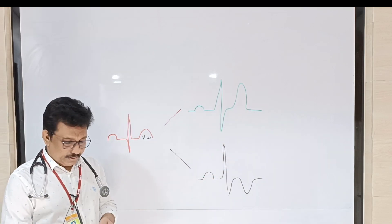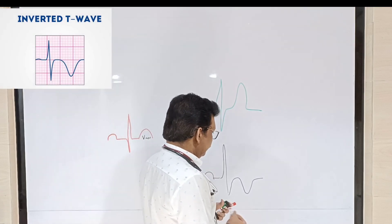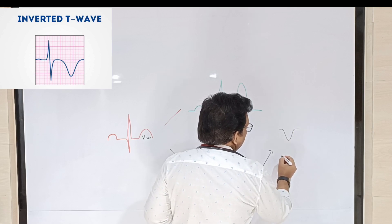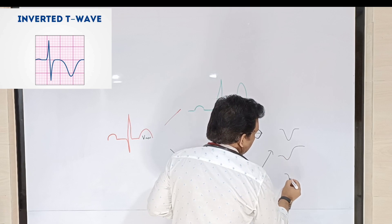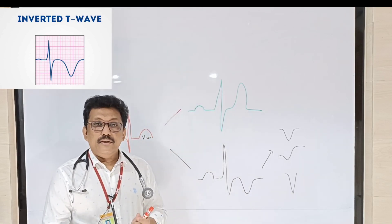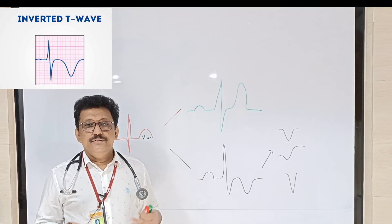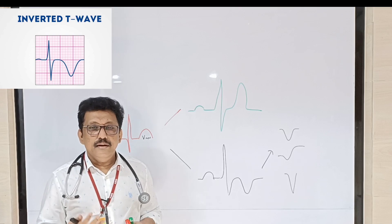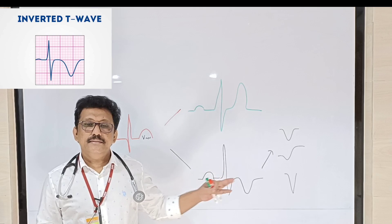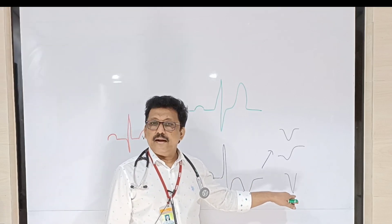Now, inverted T waves — there are different types of inversion. T waves can be symmetrically inverted, asymmetrically inverted, or deeply inverted. Deeply inverted T waves mostly indicate acute coronary syndrome. Somebody with deeply inverted T waves in anterior chest leads and severe chest pain, with highly elevated cardiac enzymes, has non-ST elevation MI. Deeply inverted T waves with chest pain and cardiac enzyme elevation should be considered as MI — that is non-ST elevation MI.